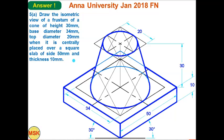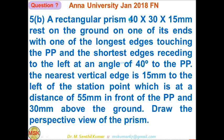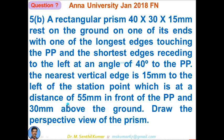If you have any clarification, pause the video, refer to the question, and see the answer diagram carefully. We'll see the last question 5B: a rectangular prism 40×30×15 rests on the ground on one of its ends, with one of the longest edges touching the PP. The shortest edge (15 mm) is inclined at 40 degrees. The nearest vertical edge is 15 mm to the left of the station point.